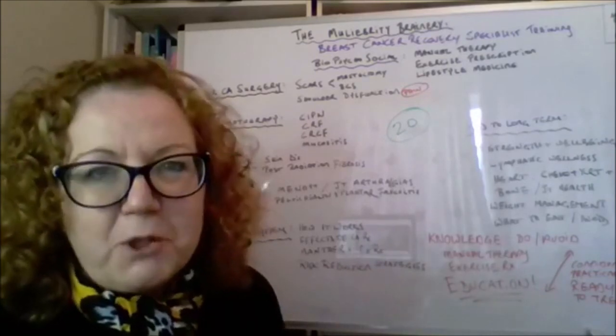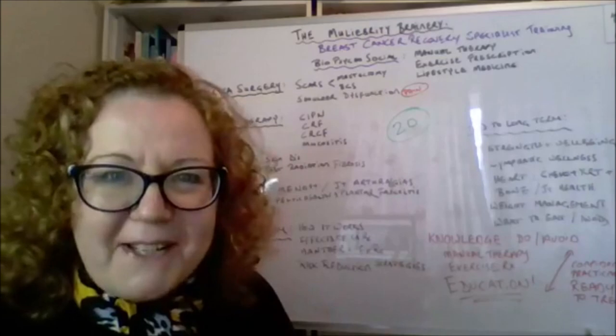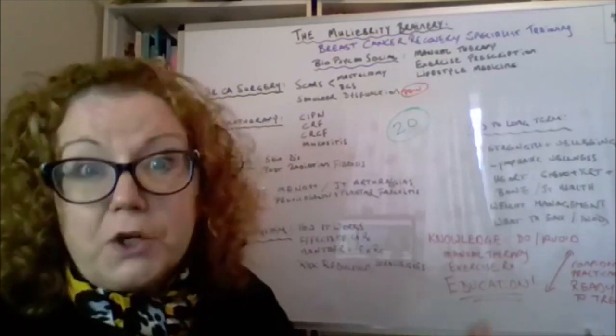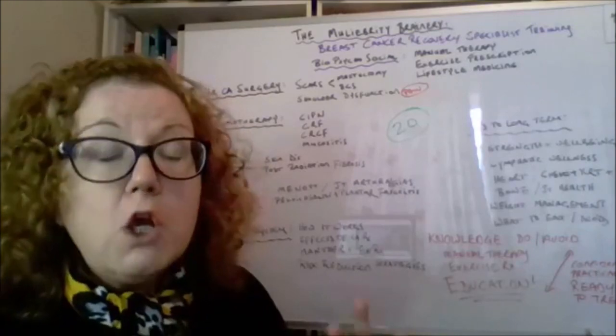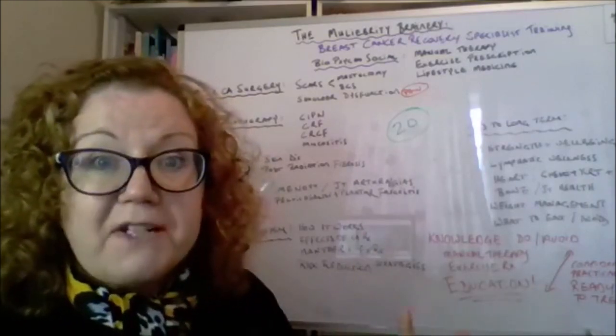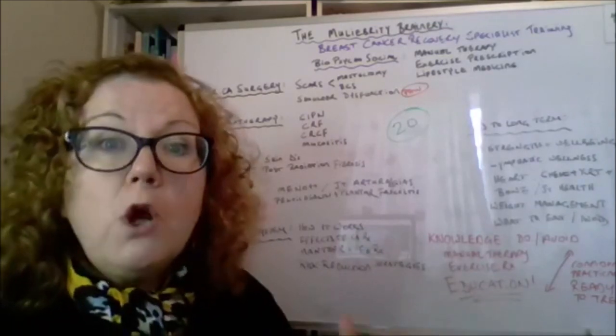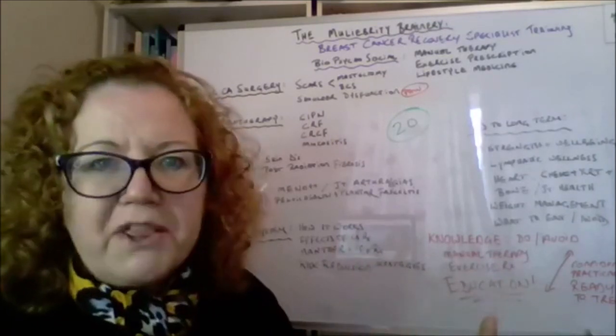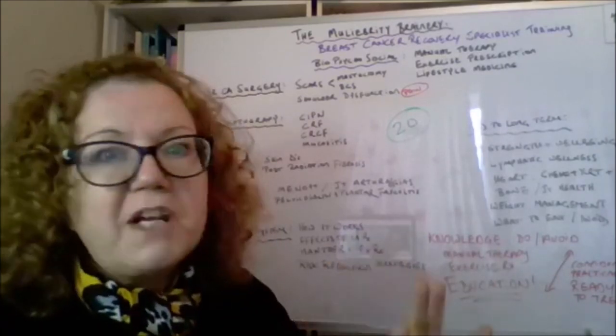And of course, the lymphatic system—we have to talk about the lymphatic system, particularly if you've had surgery, if you've had radiation. Both of those can compromise lymphatic function. So what can we do to optimize lymphatic function? What are the risk reduction strategies we need to know about? What can we do from a manual therapy perspective, in terms of self MLD, in terms of dealing with issues like cording or axillary web syndrome?